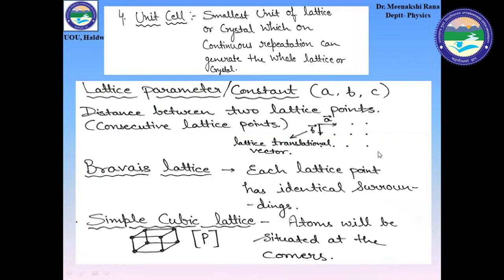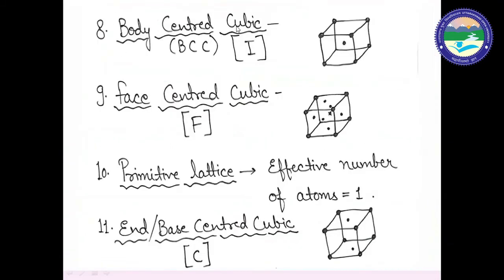Different types of lattices include: the simple cubic lattice, denoted by P, where atoms are situated only at the corners of the cube. The body-centered cubic lattice, denoted by BCC or I, has atoms at the corners and at the center of the cube. The face-centered cubic, denoted by FCC or F, has atoms at the corners and at the center of each face.